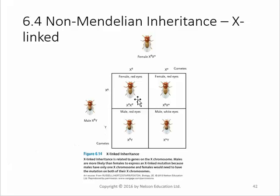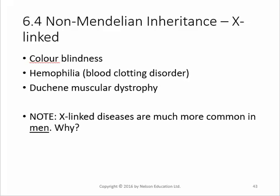Looking at the cross: the female is the carrier, the male is white-eyed, and we end up with X-linked inheritance. Two offspring are male because they got the Y from the father; two are female because they got the X from the father. All four got one of the two X's from the mother. We see X-linked things in colorblindness, hemophilia, and muscular dystrophy — these diseases happen in men way more often.